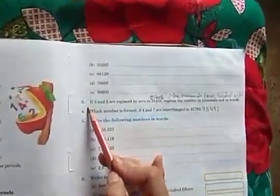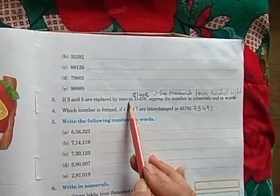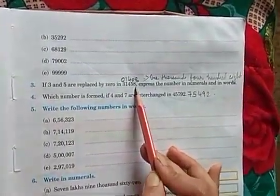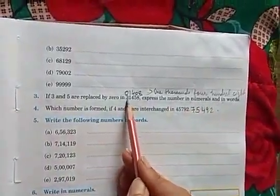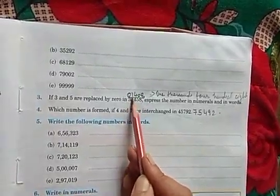Now here in exercise 1.2, there is a question, question number 3, that is if 3 and 5 are replaced by 0 in 31458 and express the number in numerals and in words. So if you will replace 3 and 5 by 0,